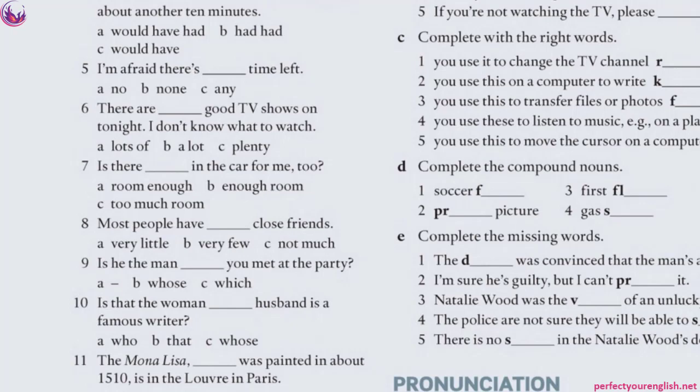Number 7: 'Is there enough room in the car for me too?' B is correct. 'Room enough' is wrong — 'enough' comes before a noun. 'Room' here is an uncountable noun meaning space. C is wrong because 'too much' has a negative meaning — we're asking if there's sufficient space, not whether there's an excessive amount.